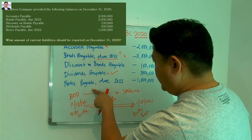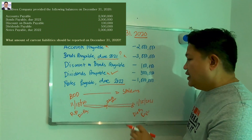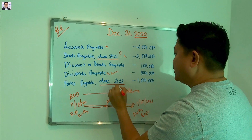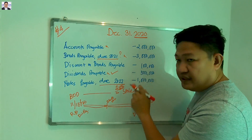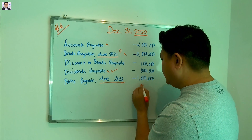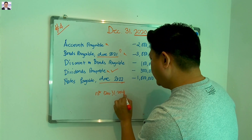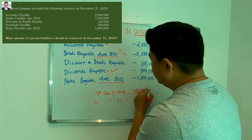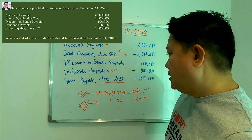Notes payable of 1 million — the due date mentioned is 2022, and we are preparing December 31, 2020, so it matures two years from the statement date. We will not consider this as current liability. However, some notes payable are due on a staggered or installment basis. For example, if the first payment is 500,000 due December 31, 2021, and the last payment is 500,000 due December 31, 2022, then you would classify the first installment as current and the second as non-current.